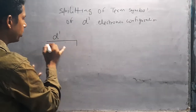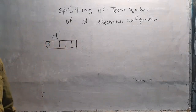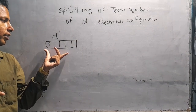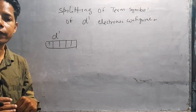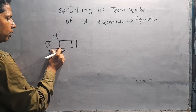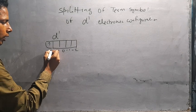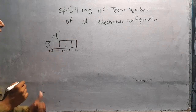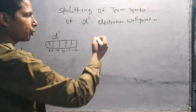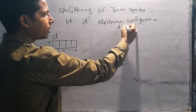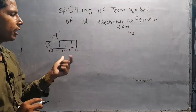D1 में एक electron है। D में five orbitals होते हैं और एक electron भरा हुआ है। LS coupling से term symbol निकालने के लिए सबसे पहले electronic configuration लिखेंगे और magnetic quantum number को maximum value से शुरू करके लिखेंगे: +2, +1, 0, -1, -2। यही हमें L की value देगी। Complete term symbol होता है 2S+1 L_J।